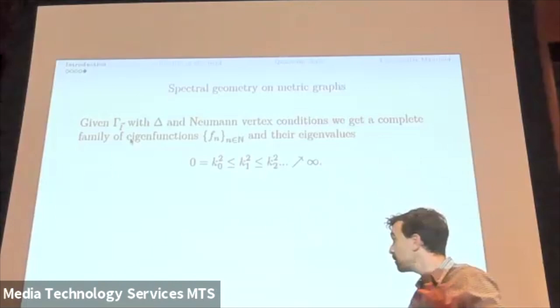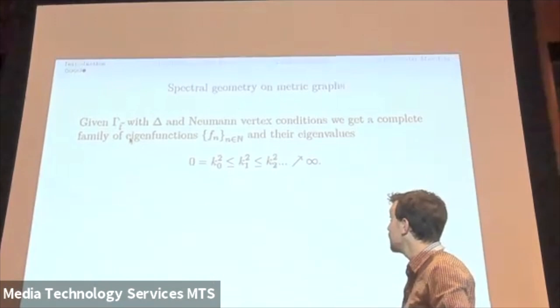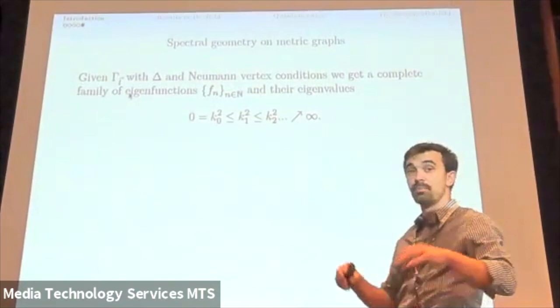So under this setting, when we have such a graph, a metric graph with Laplacian and Neumann vertex conditions, we get a complete family of eigenfunctions and we get a set of eigenvalues.